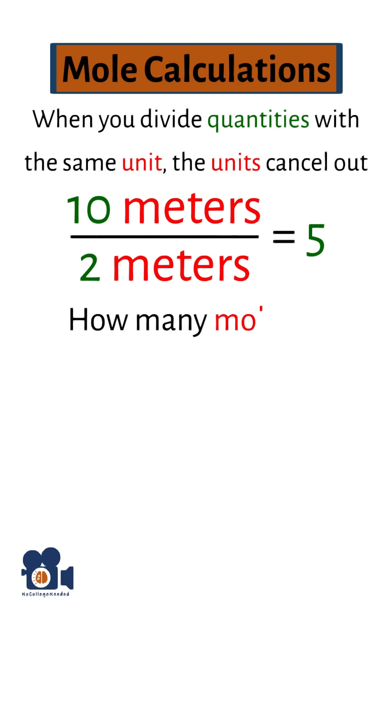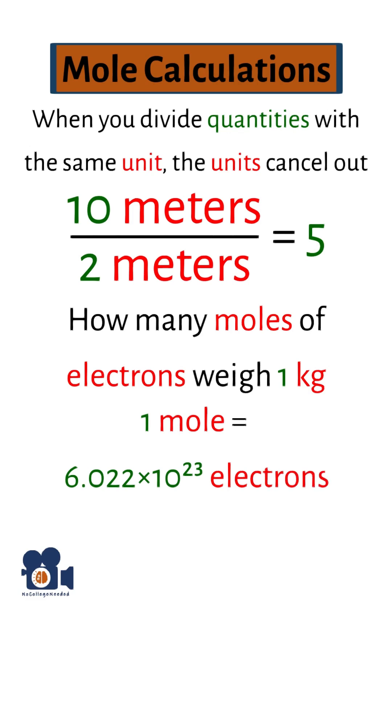Now let's calculate how many moles of electrons weigh 1 kilogram, given that 1 mole equals 6.022 times 10 to the 23rd electrons, and 1 electron equals 9.109 times 10 to the negative 31 kilograms.